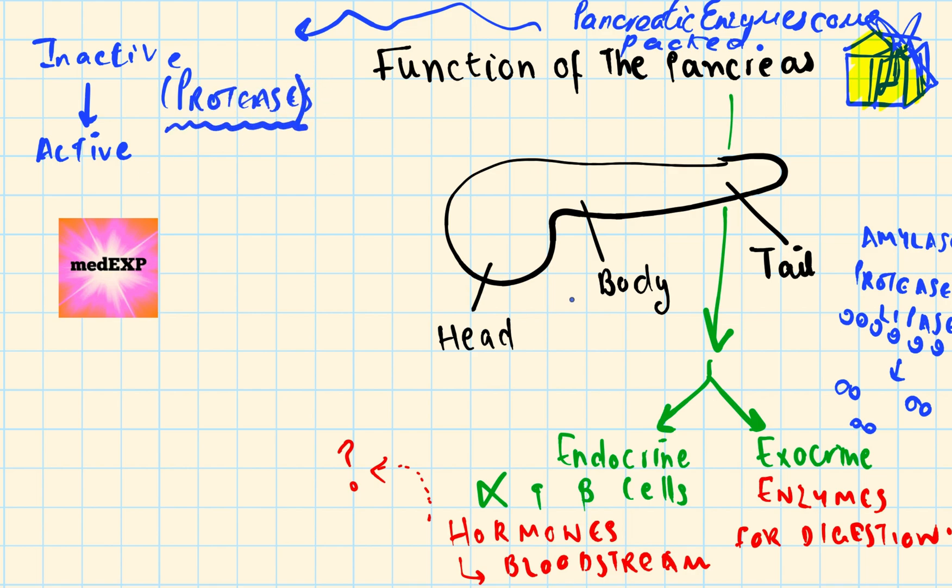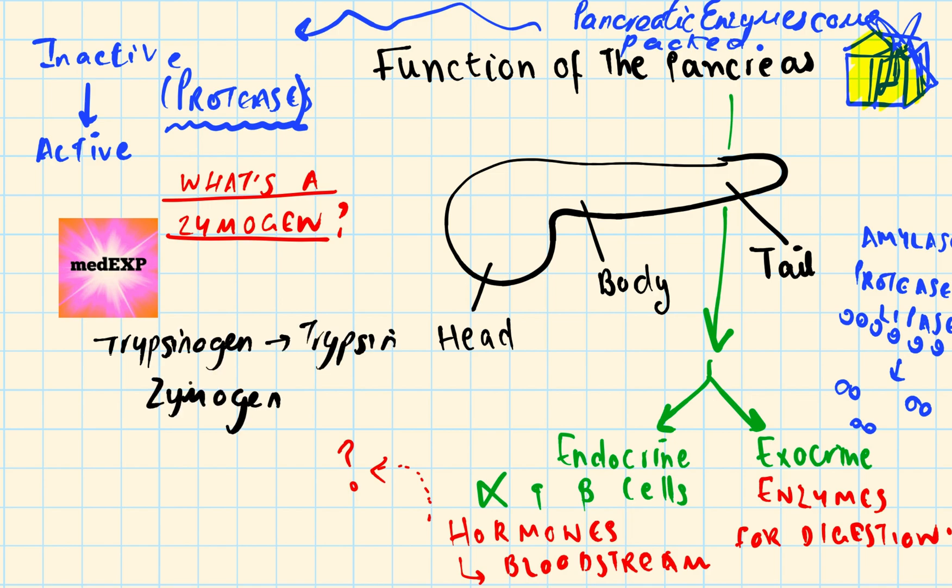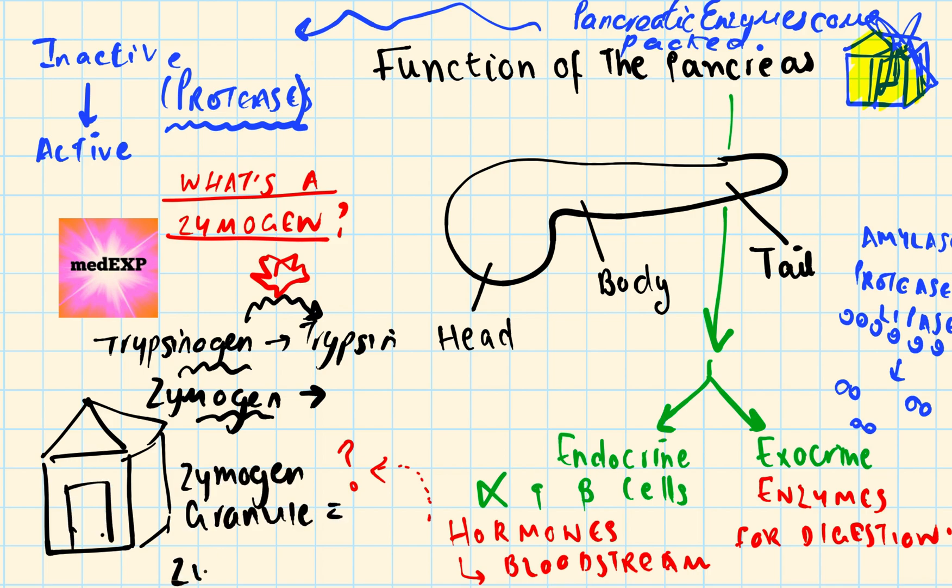We need to unwrap the present, we need to activate these enzymes so that they can then be useful. So what's a zymogen? A zymogen is an inactivated form of a particular enzyme and for example, trypsinogen is a zymogen and then it can be converted into trypsin. And these zymogens are often stored in these zymogen granules.